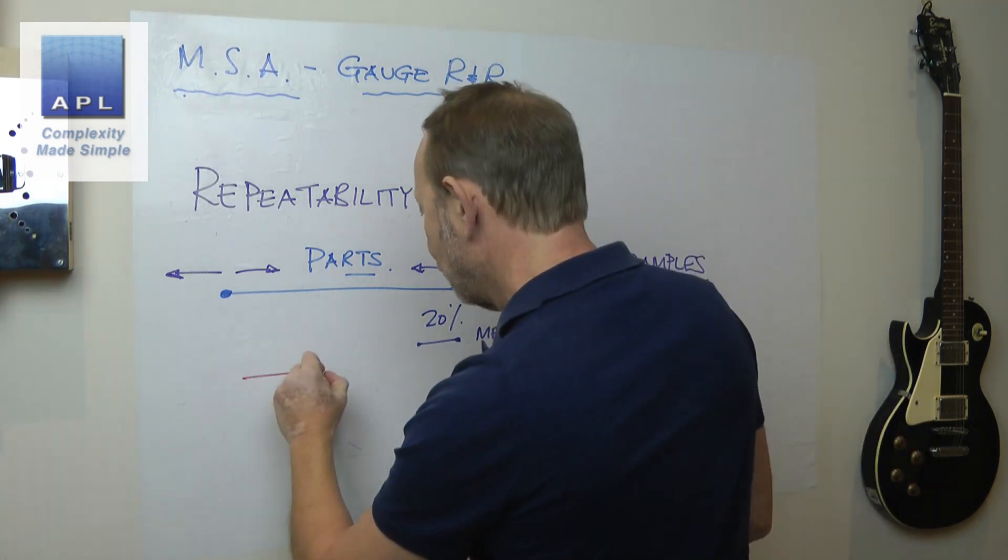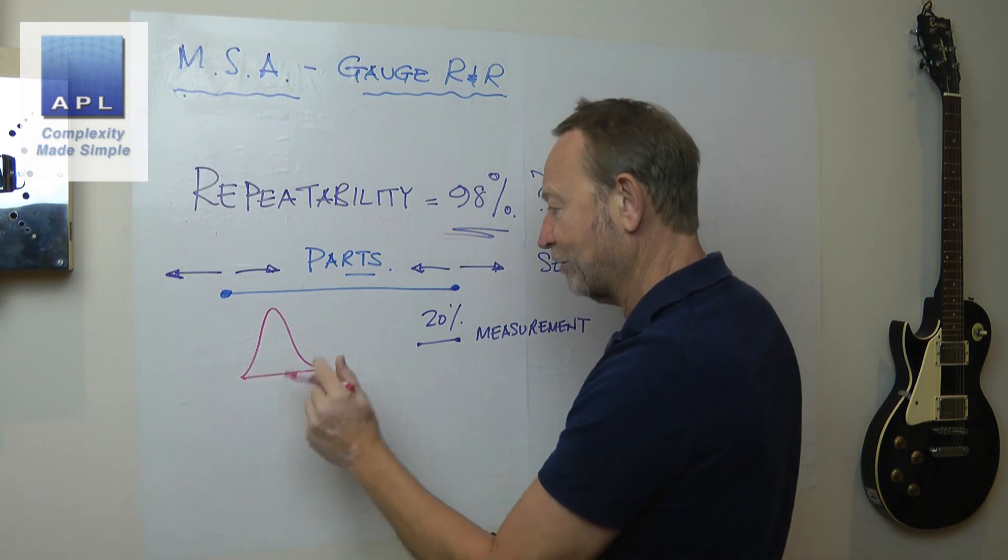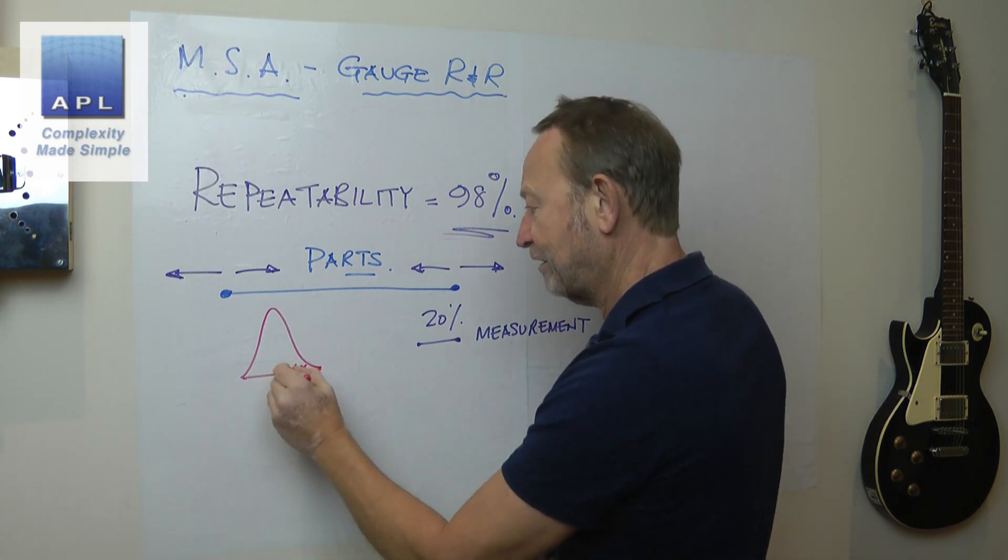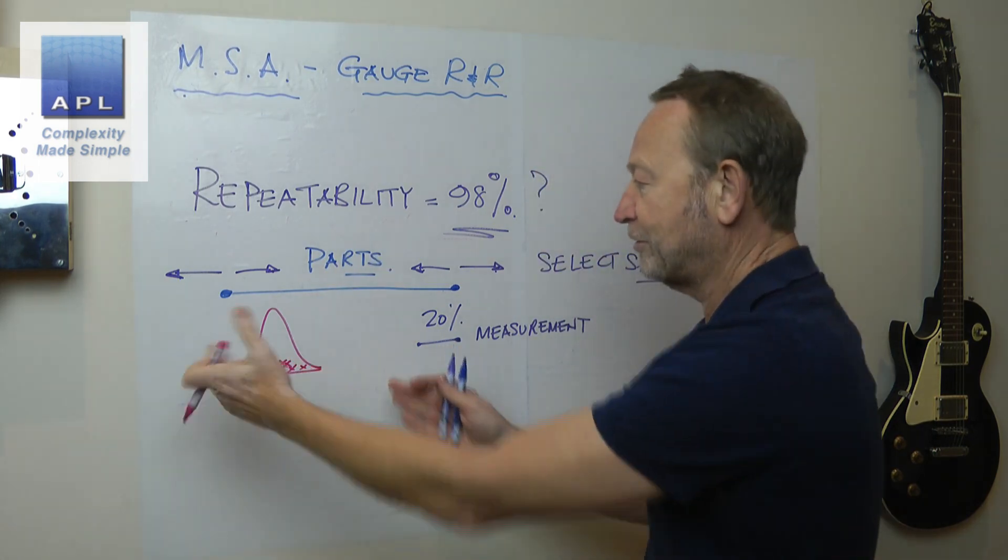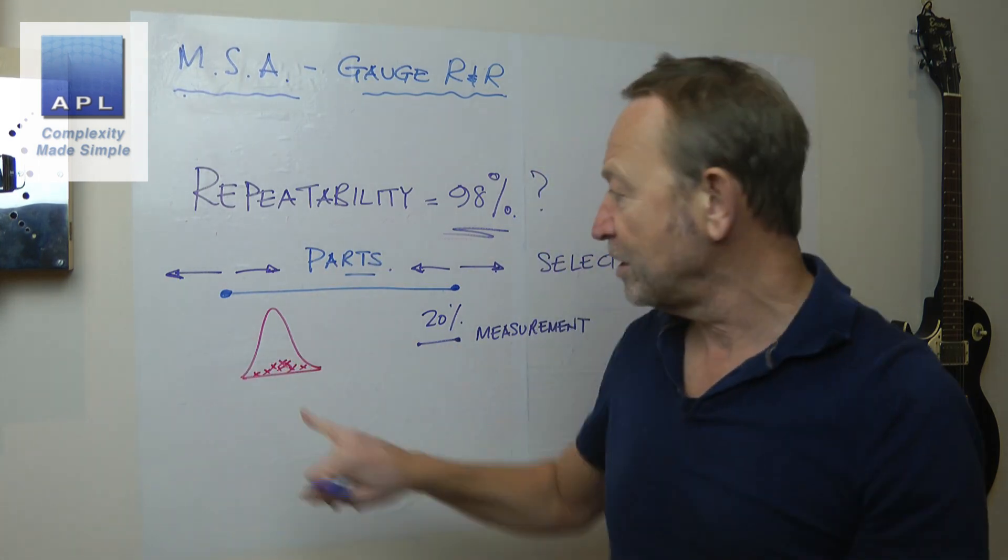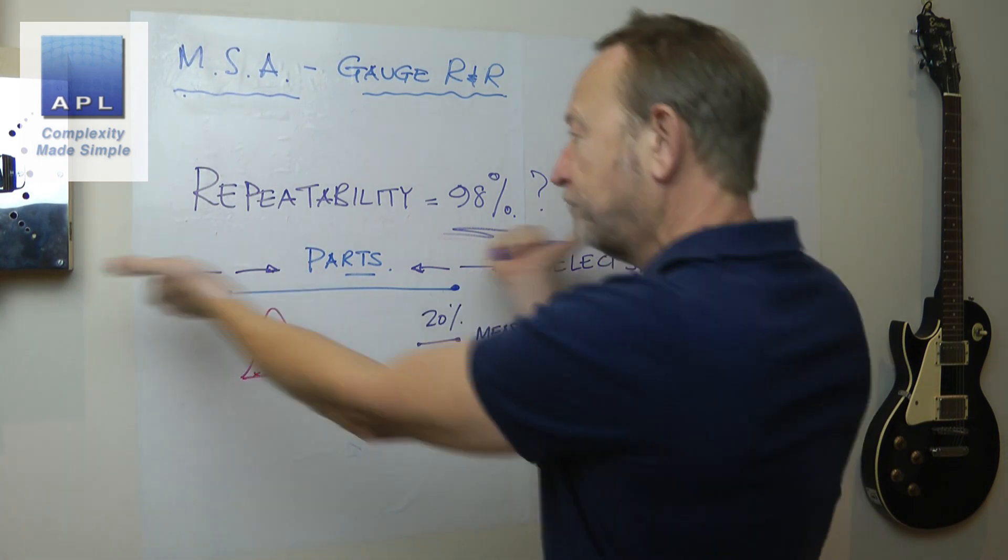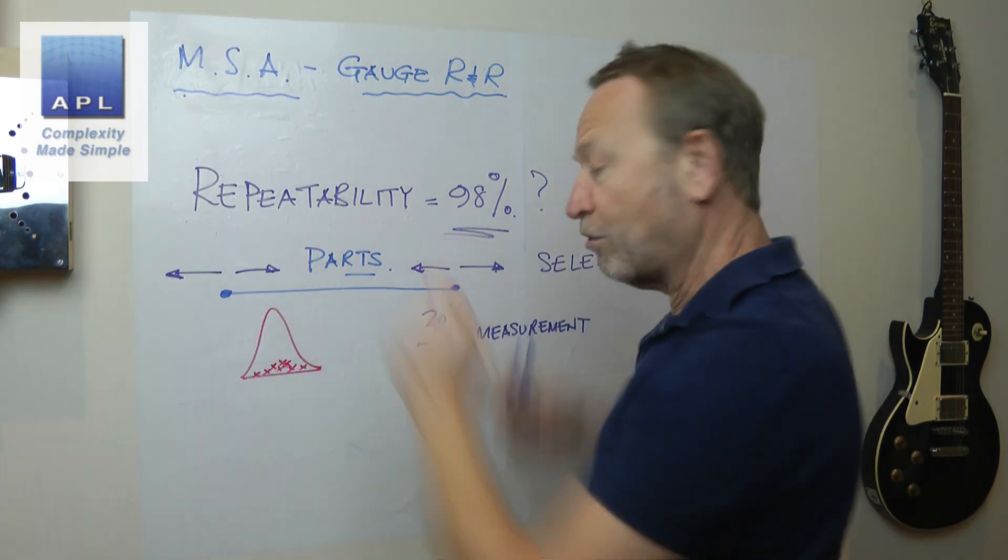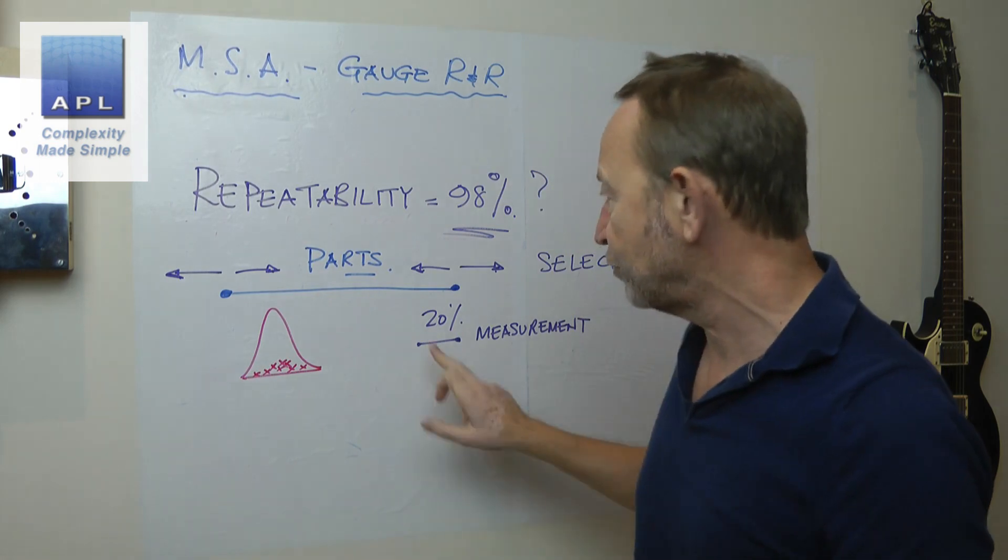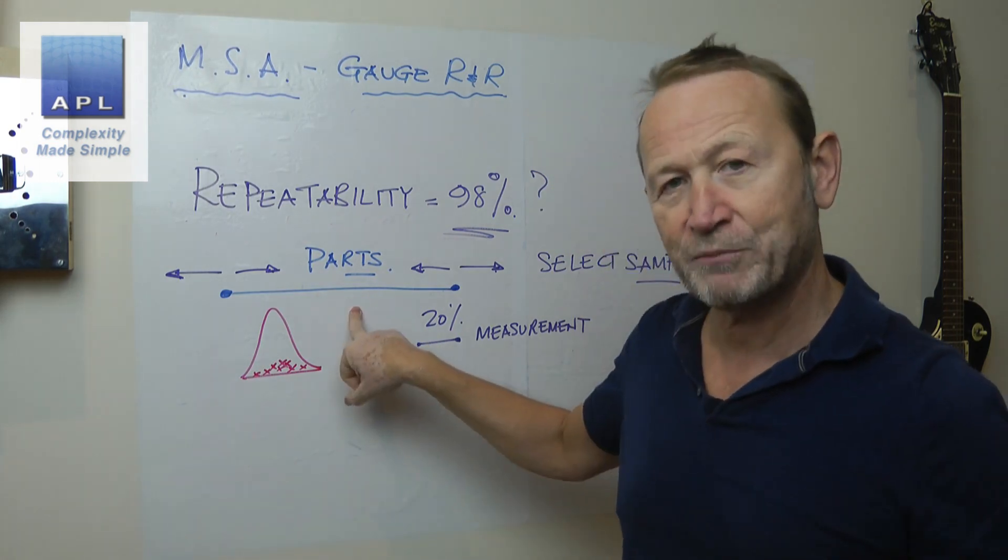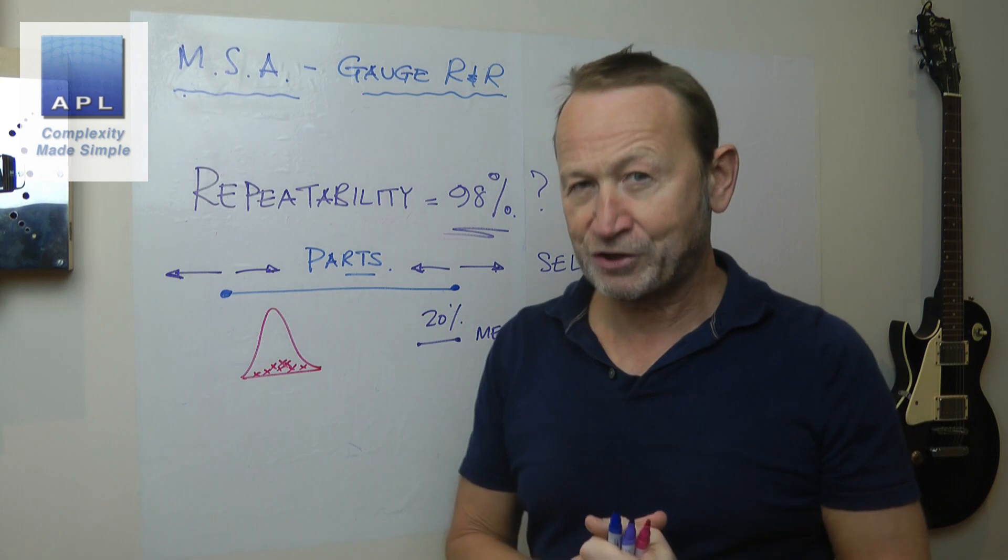Take 10 randomly out of your manufacturing process. In other words, your manufacturing process creates variability that looks like that. If you randomly take 10, the likelihood is that you will take 10 that represents that, and you won't have artificially made it big or artificially made it small. So that's the first thing to say. It's a ratio of what your manufacturing process is doing compared to what your measurement system is doing.